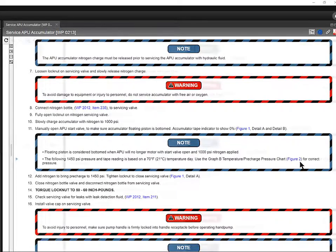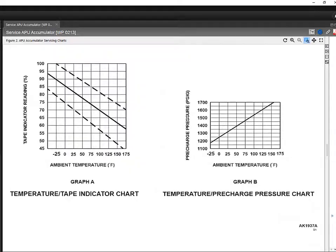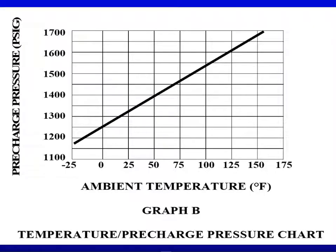When we look at the chart, the bottom shows the ambient temperature in degrees Fahrenheit. It goes from negative 25 all the way to 175. On the left, you have your pre-charge pressure in PSI starting from 1100 all the way to 1700. When we look at a 50 degree Fahrenheit day, you'll follow it up to the slanted line and read to the left to obtain your pressure.